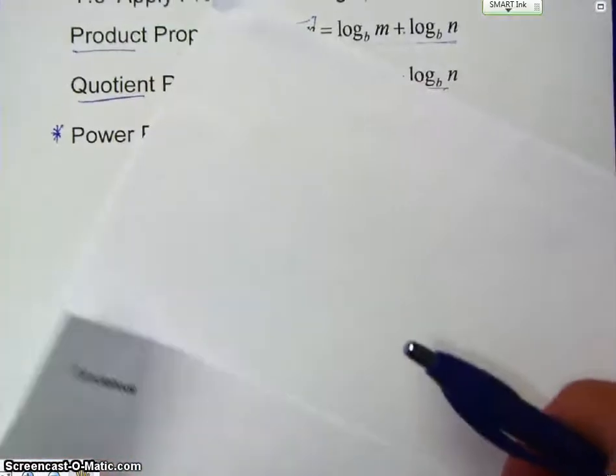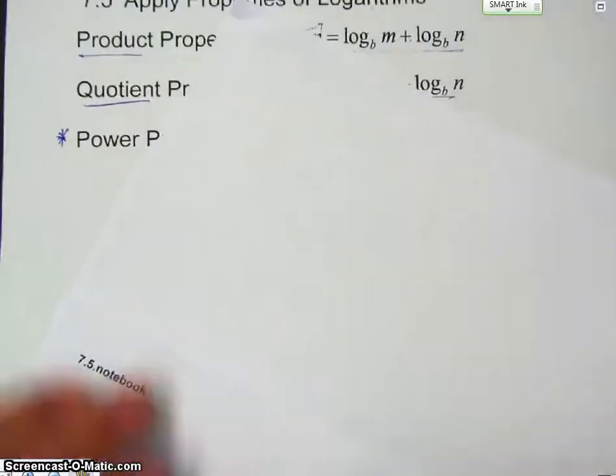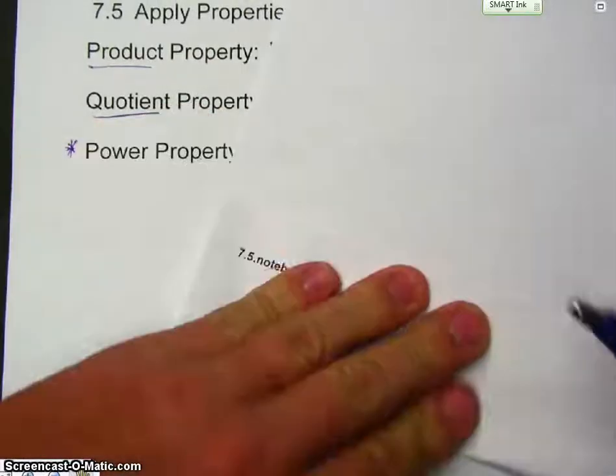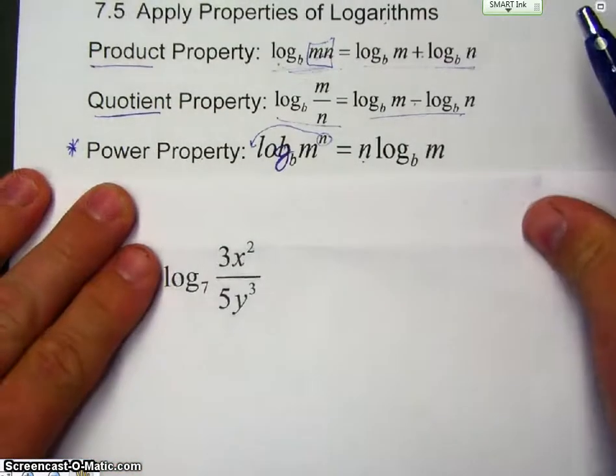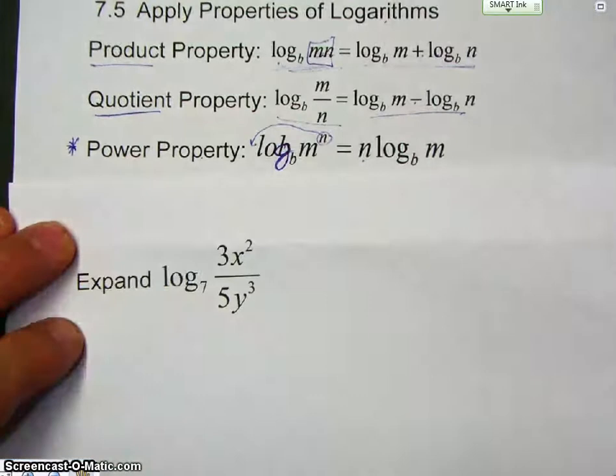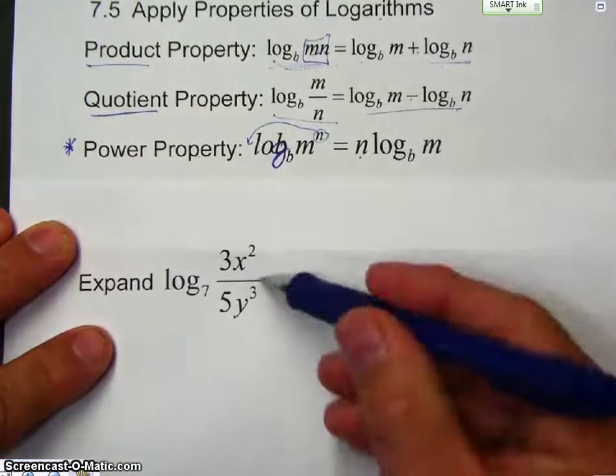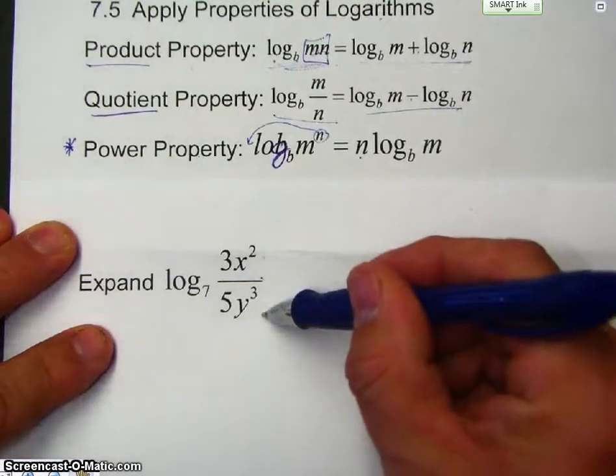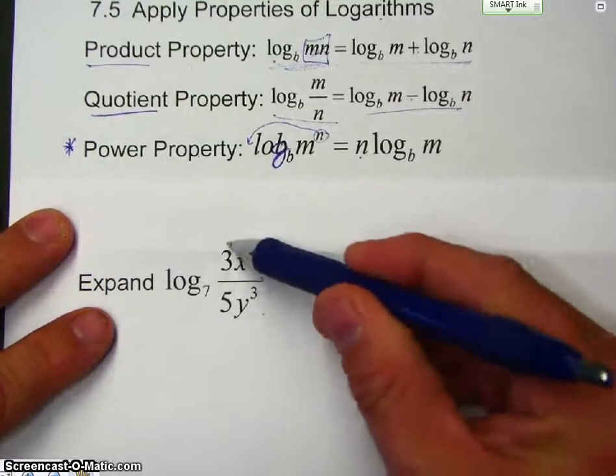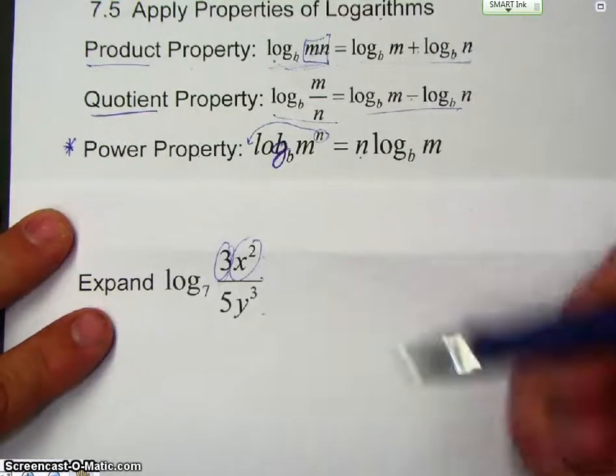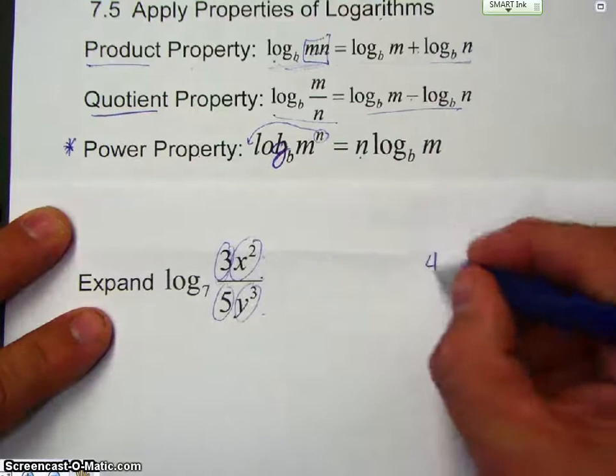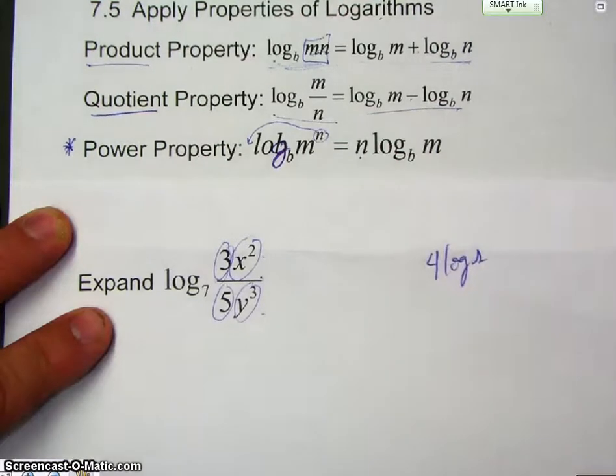And, our last example. If you notice, I have a quotient. So, I've got a top and bottom. So, in the top, I'm going to have 1, 2. On the bottom, I'm going to have 1, 2. So, I'm going to have 4 logs when I expand this.